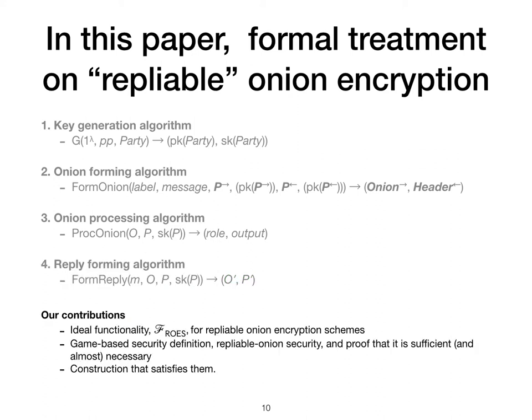Our contributions are as follows. First, we define the ideal functionality for repliable onion encryption in Canetti's UC model, or more precisely in Canetti, Cohen, and Lindell's simplified UC model. We call this F-Rows for repliable onion encryption scheme. Next, we present a game-based definition, repliable onion security, and prove that it is both sufficient and almost necessary for realizing F-Rows. And finally, we present the first provably secure repliable onion encryption scheme: the shallot encryption scheme.